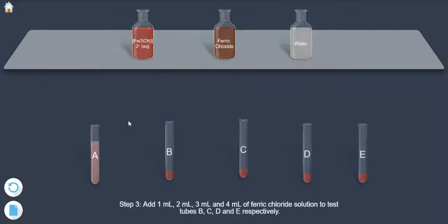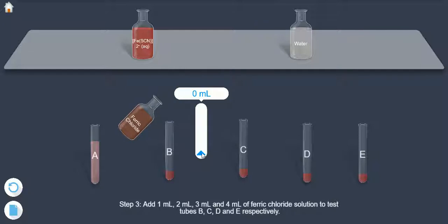Add 1 ml, 2 ml, 3 ml and 4 ml of ferric chloride solution to test tubes B, C, D and E respectively.